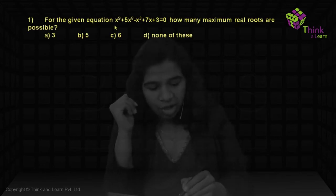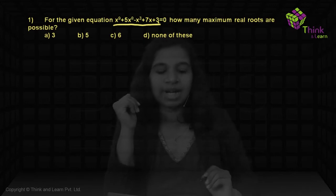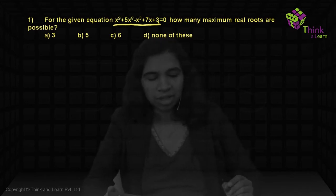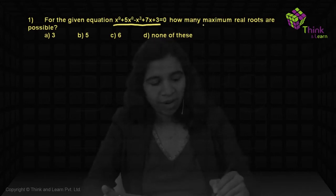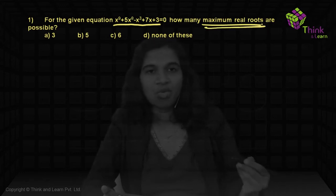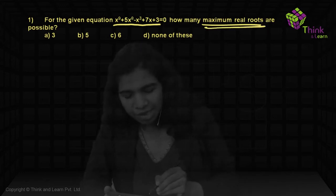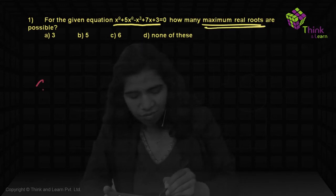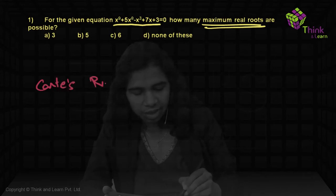Now that we've learned everything about quadratic equations, let's start solving some questions. The first question is actually based on higher order equations — not quadratic, but a higher order equation. This is a ninth order equation, and the question is to find the maximum number of real roots. Whenever you have maximum number of real roots, the way we'll solve it is using Descartes' rule.